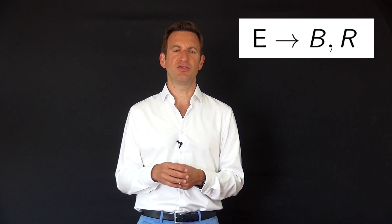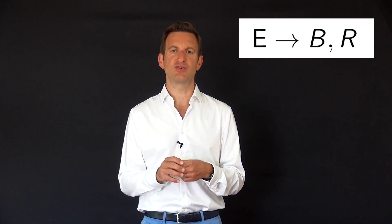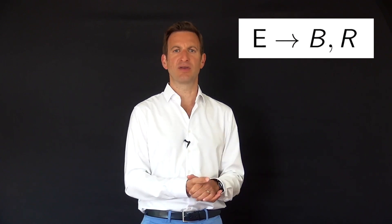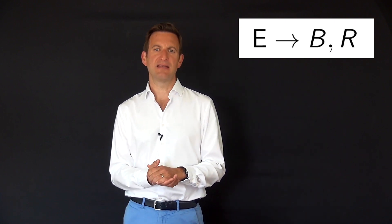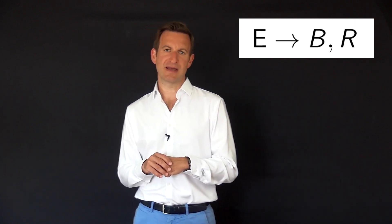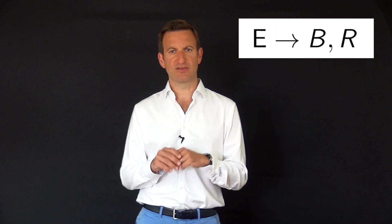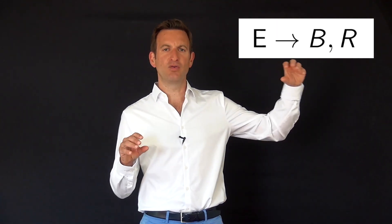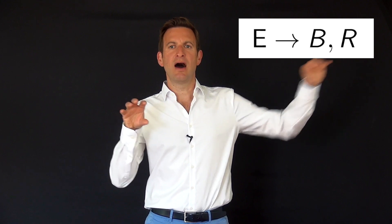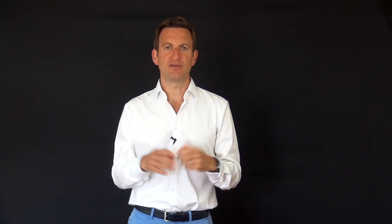Once I have E, I can decompose it and compute the rotation matrix, which tells me how camera two is oriented with respect to camera one. I also get the baseline vector, but only its direction, not its length — so I know where camera two is located with respect to camera one, but not how far away it is. This is the scale ambiguity.